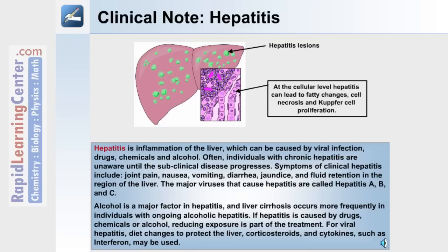The symptoms of clinical hepatitis include joint pain, nausea, diarrhea, vomiting, jaundice, and fluid retention in the region of the liver. The major viruses that cause hepatitis are called hepatitis A, B, and C. Alcohol is also a major factor in hepatitis, and liver cirrhosis occurs more frequently in individuals with ongoing alcoholic hepatitis.